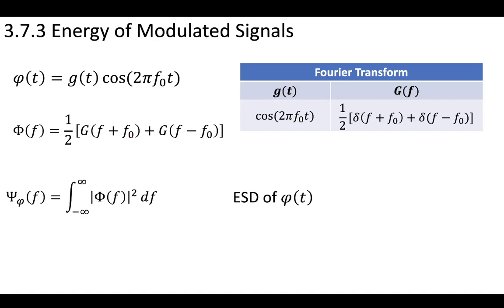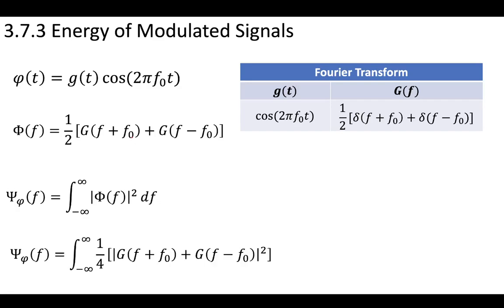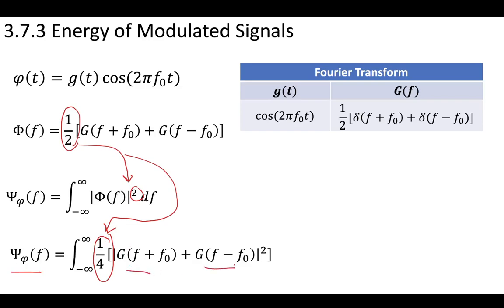Finding the energy spectral density of your modulated signal is done by performing the standard energy integral, just as we've seen before. Because your modulated signal has this one-half term, that one-half term gets squared inside the integral, and that introduces a one-quarter term in the energy spectral density of the modulated function. So you now have this one-quarter term multiplied by the components of your original signal in the frequency domain.